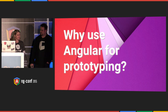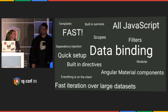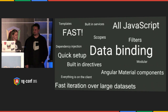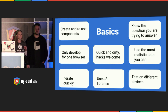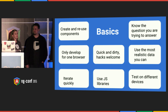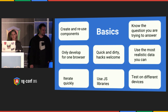Why did we choose Angular for our prototyping framework? Probably for a lot of the same reasons you chose it — awesome data binding, custom directives, built-in directives, all of the Angular goodness. But prototyping is a lot different than writing production code, so the way we take advantage of these features is going to be a little different. Prototyping is all about doing the absolute minimum amount of work to fake an experience to answer a question, and about moving really quickly and iterating.